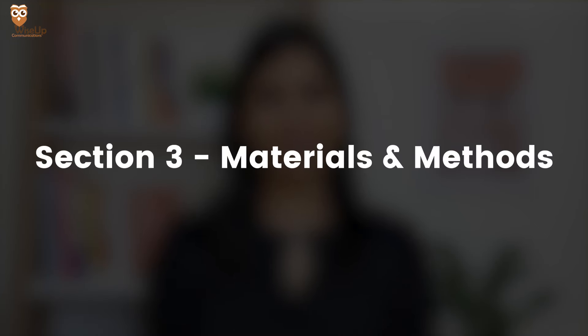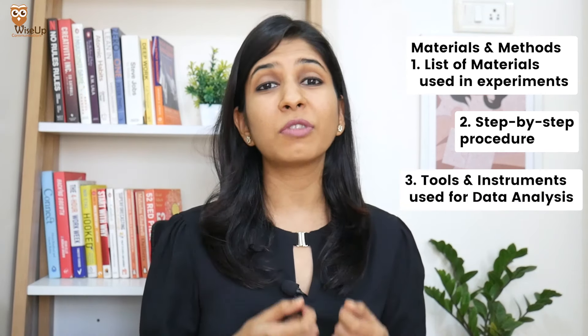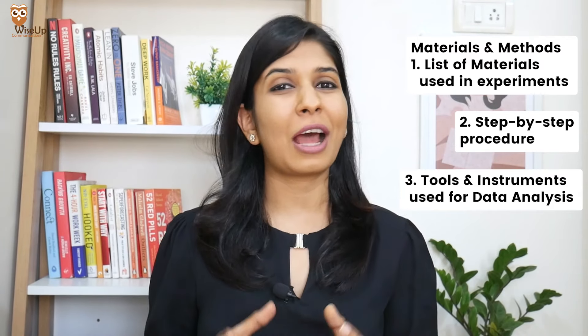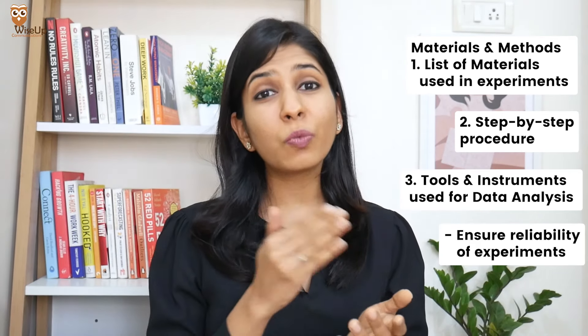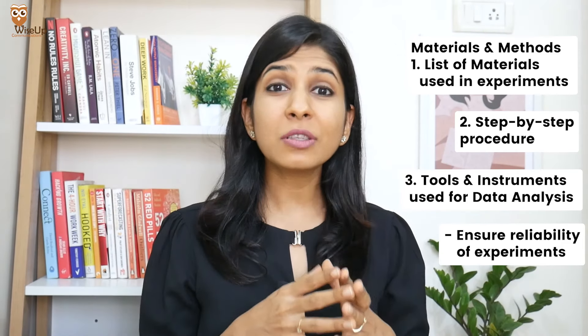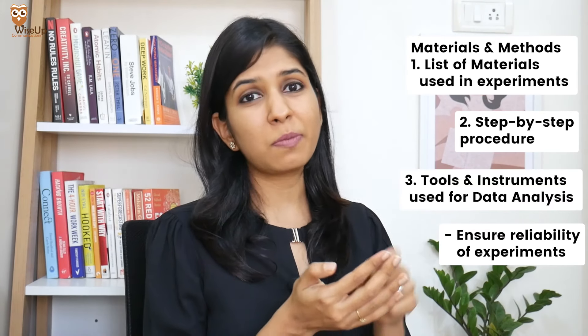Next is the materials and methods section. Here you need to explain to your audience the step-by-step process you followed in order to arrive at your final result. First we share the list of materials used to conduct our experiments, then the step-by-step procedure followed to arrive at the final result, and then the equipment, tools, or instruments used to measure or analyze the data. This is one of the easiest sections to write, but one thing to remember is that your experiments need to be reliable — written so transparently that if somebody tries to replicate them, they should arrive at the same results. This shows the reliability of your research paper and improves your credibility as an author.